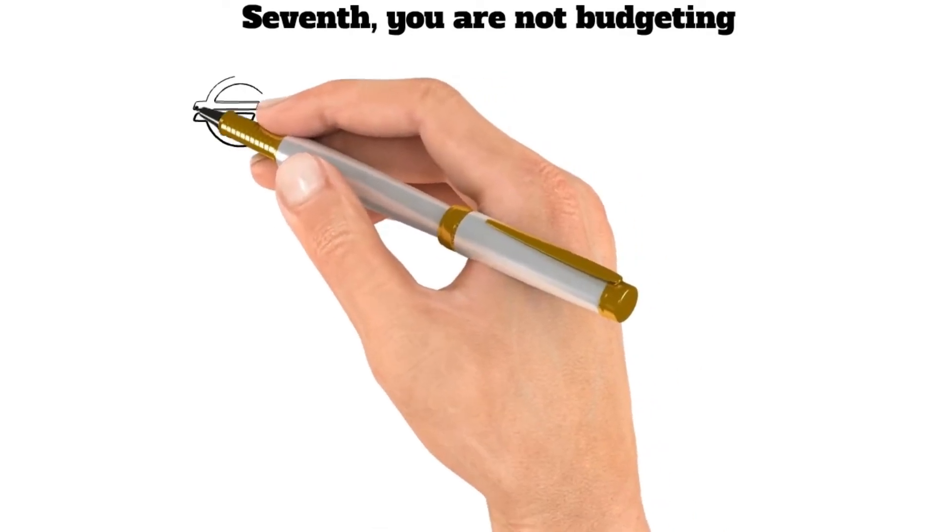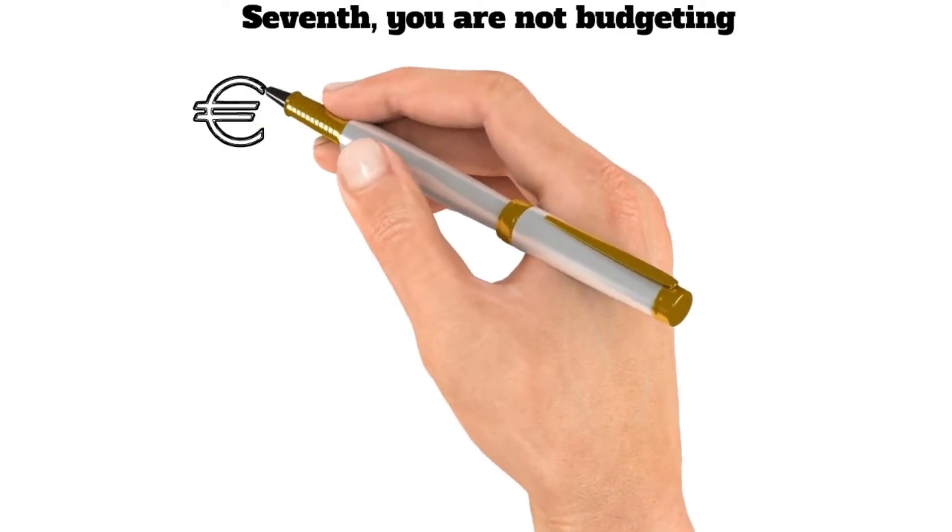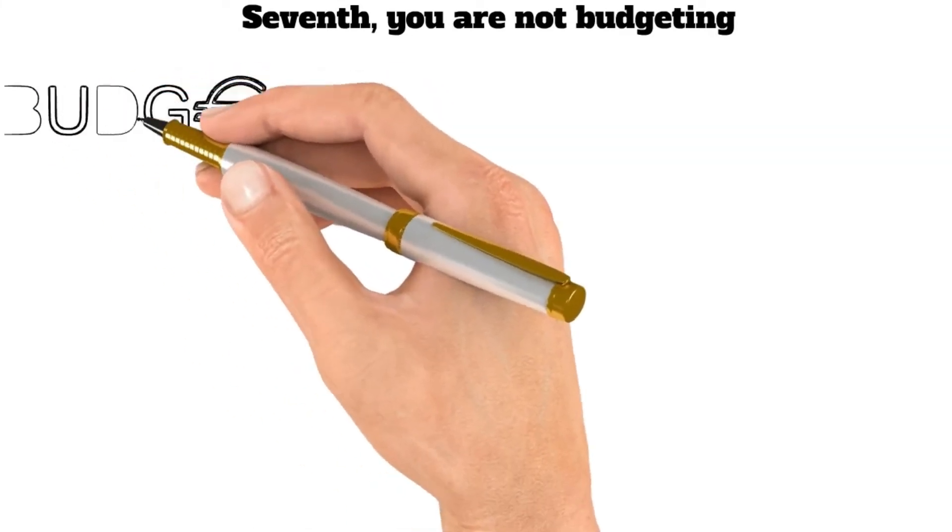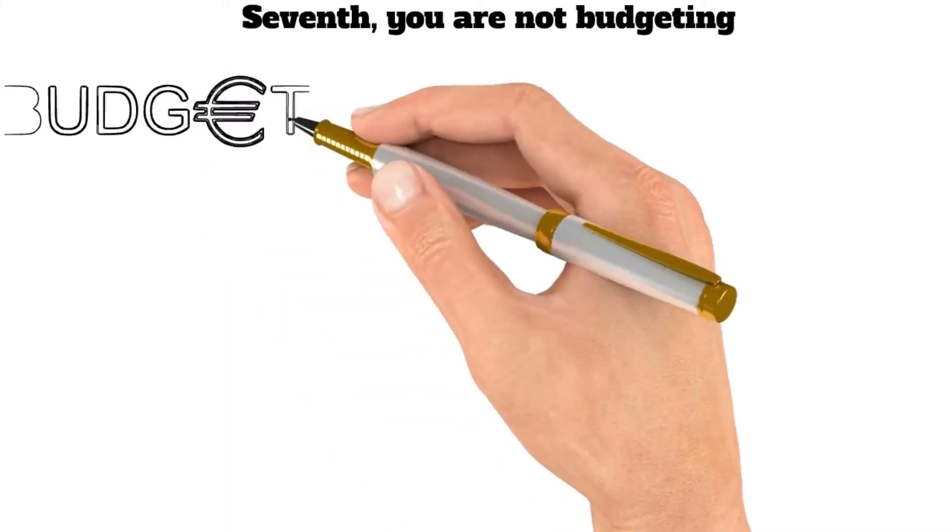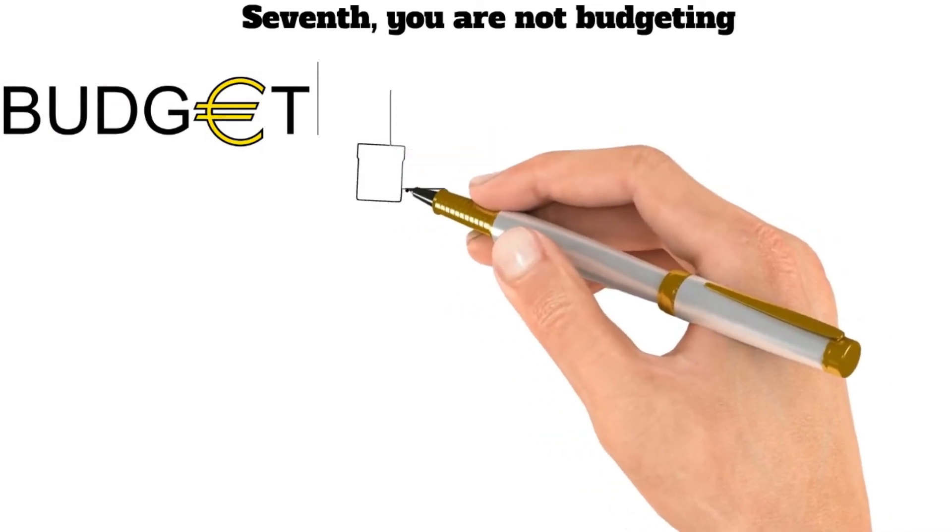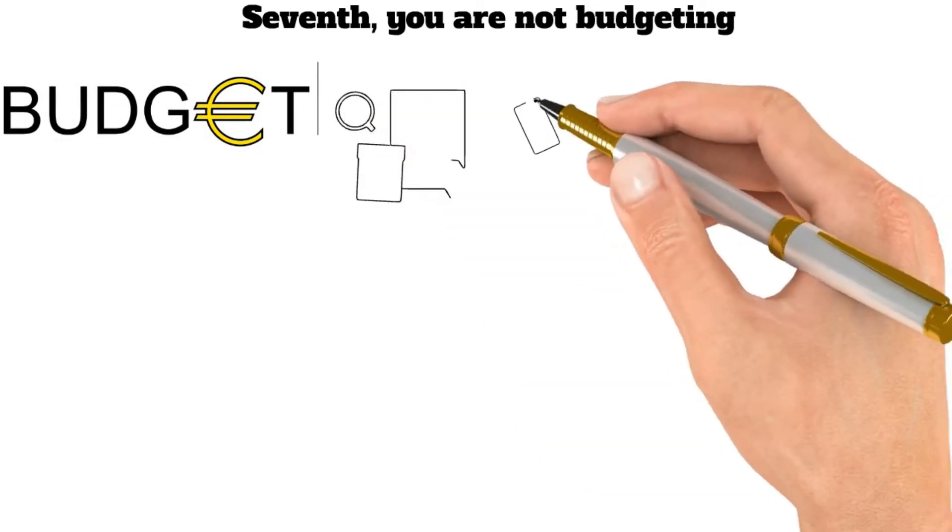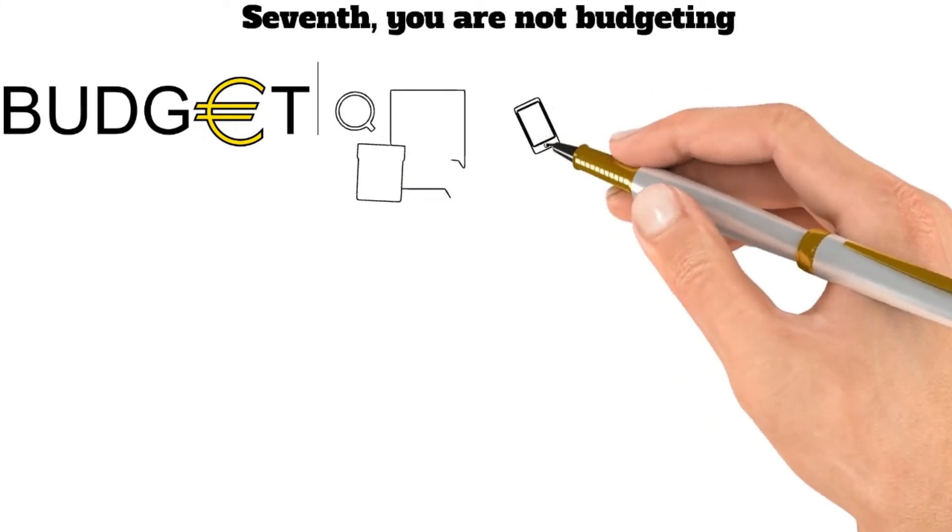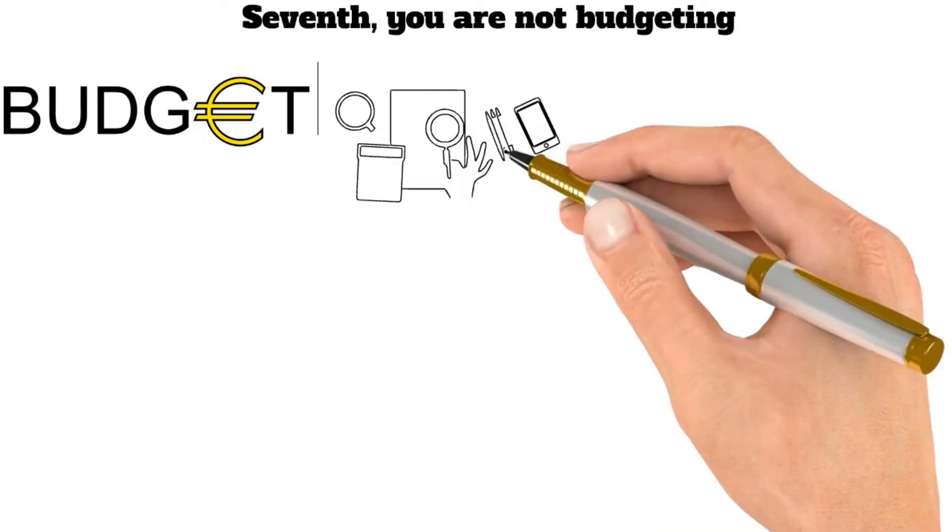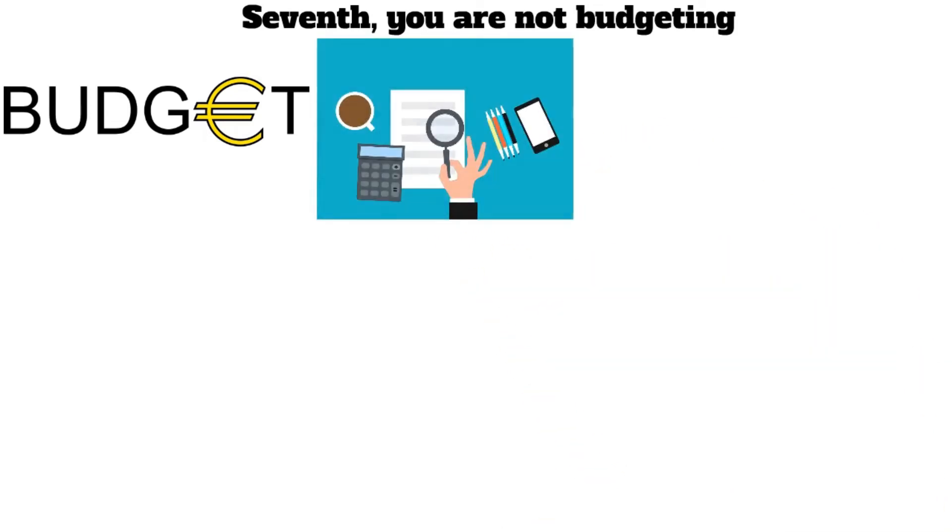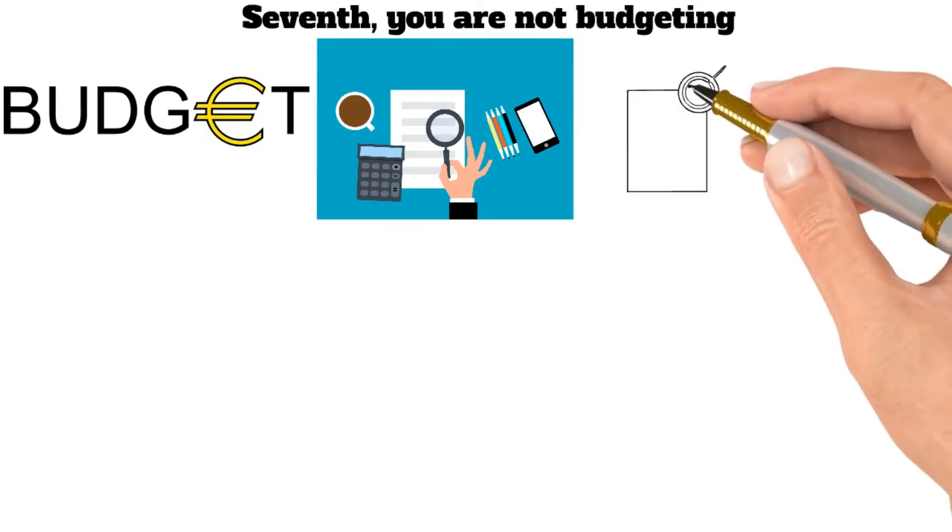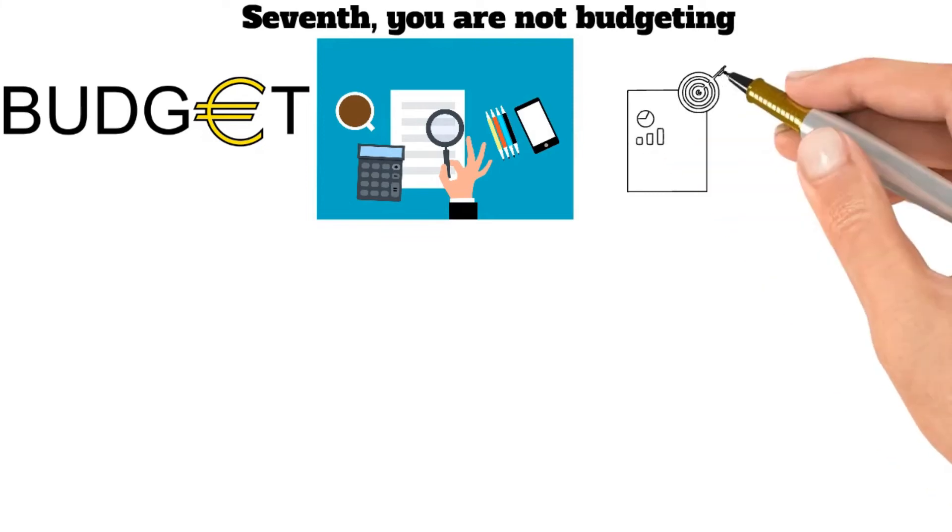Budgeting is crucial to all people, regardless of their financial situation. A budget can help you track your spending, save money, and make sure you're using your money in the best way possible. There are many different ways to budget, so it's essential to find one that works for you. There are many budgeting apps and programs available, or you can create your budget with a spreadsheet or pen and paper. The most important thing is to be consistent with your budgeting and making sure you're sticking to your goals.